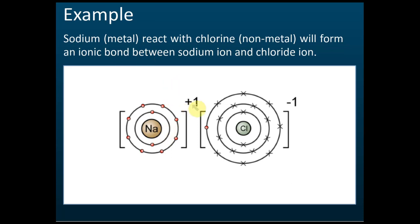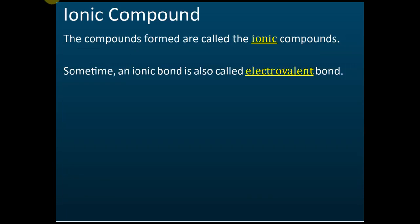For example in sodium chloride: sodium throws away one electron, so its charge becomes positive one. Chlorine receives this electron from sodium — those electrons are shown as crosses and circles in the diagram. Chlorine's charge becomes negative one. Positive and negative attract each other, so sodium attracts chlorine. That's how the ionic compound looks: one metal, one non-metal, each with a charge. Compounds formed by ionic bonds are called ionic compounds.